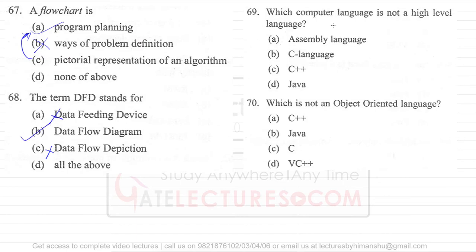Question 69: which computer language is not a high-level language? We have four languages here: assembly language, C language, C++ language, and Java. C, C++, and Java are considered high-level programming languages. Assembly language is not a high-level programming language.